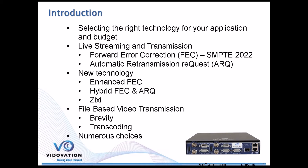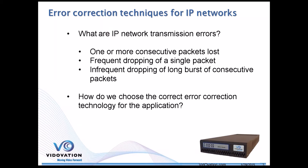Let's dive into forward error correction. Forward error correction is correcting for errors in the transport chain. Some of this might be a little rudimentary, but we've got to cover the basics. Basically, an error transmission is anywhere from one packet being lost to a sequence of multiple packets being lost in a transport stream. For our discussion today, it's a compressed transport stream.